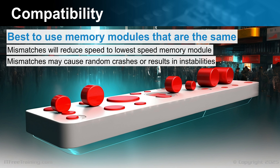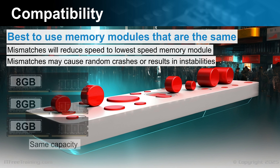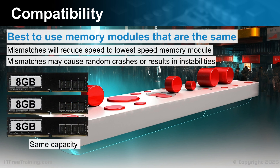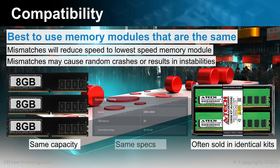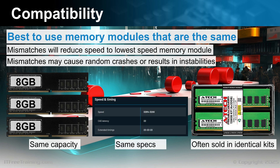When installing memory modules, you should use memory modules of the same capacity. Multi-channel can only work with memory modules that are of the same size. In some cases, your motherboard may support flex mode. Flex mode allows different memory modules of different sizes to be used together. The capacity that matches is run as multi-channel while the remainder runs as single channel. When purchasing memory modules, they are often sold in kits, so you can guarantee they will work together. If you are using different memory modules, check the specifications to see if they are the same. If they are different, you can always give it a try.